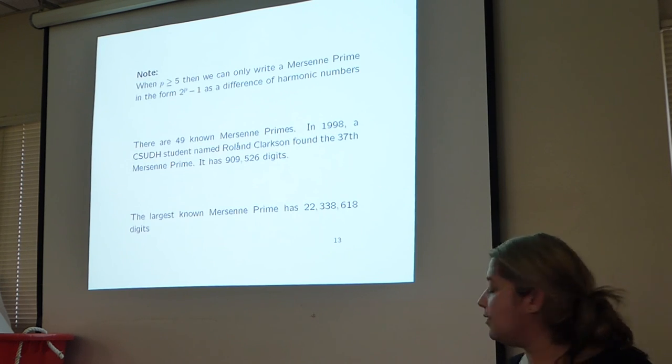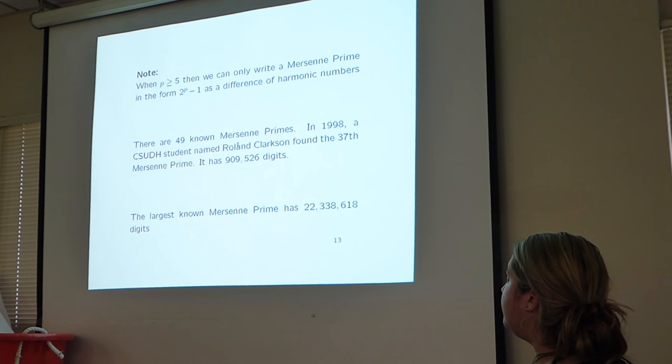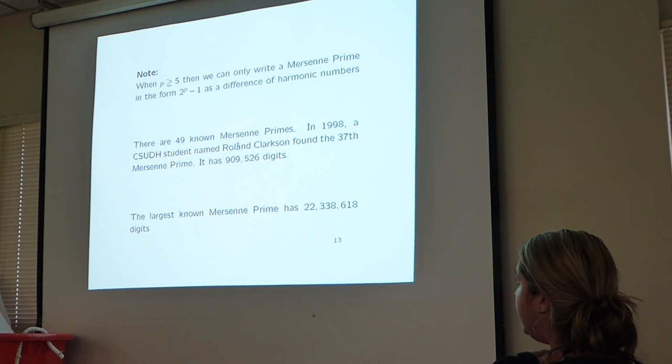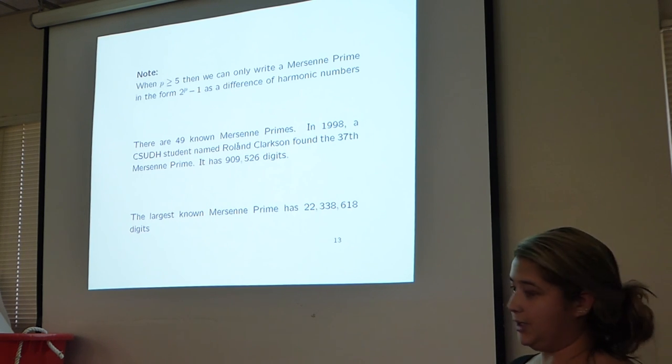Here are some fun facts about Mersenne primes. This is actually proved in our paper that when p is greater than or equal to 5, then the only way we can write it as a difference of harmonic numbers is in this form. There are actually only 49 known Mersenne primes. In 1998, a Dominguez-Hill student actually found the 37th Mersenne prime. It had over 909,000 digits. Currently, the largest known Mersenne prime has over 22 million digits.